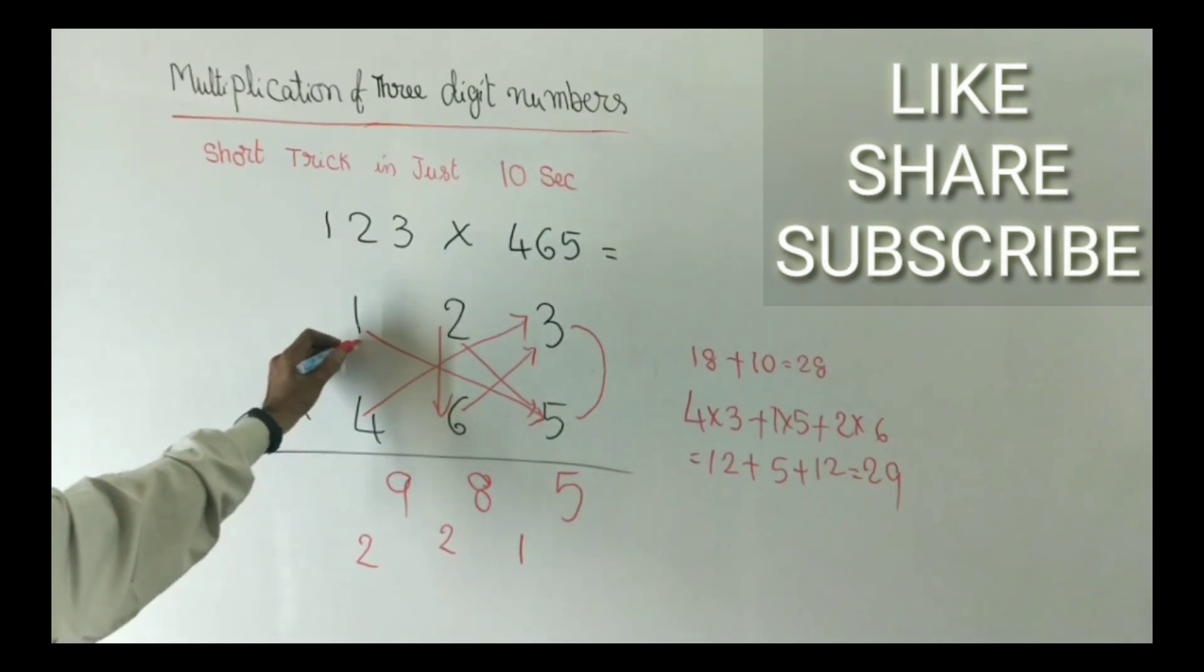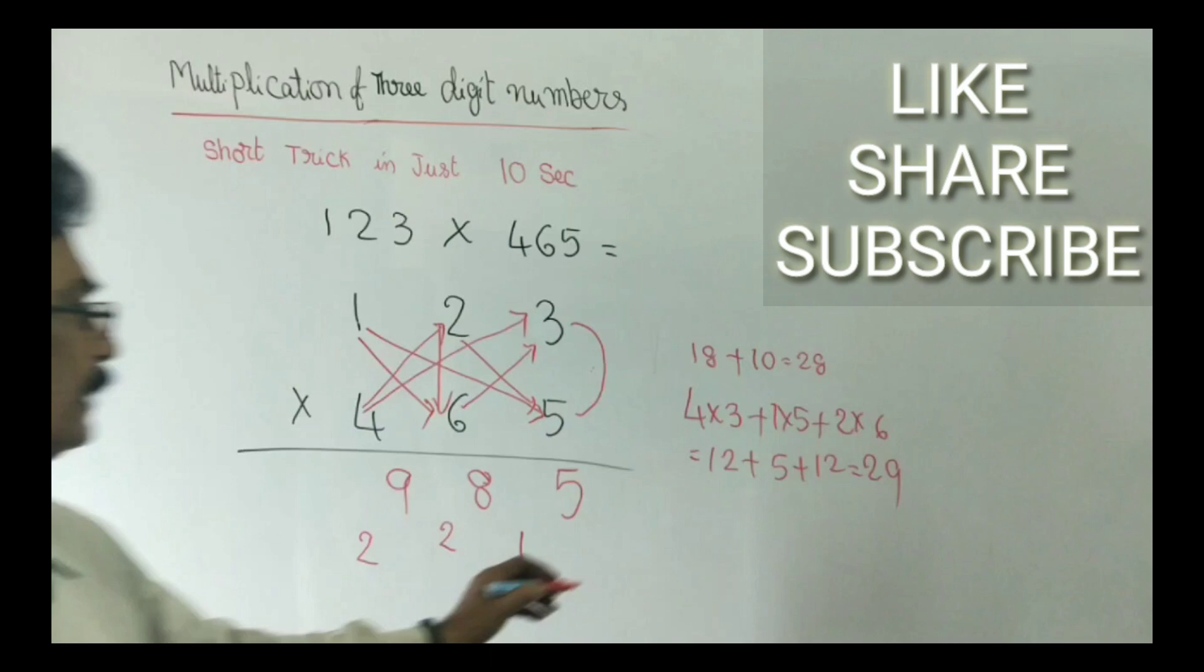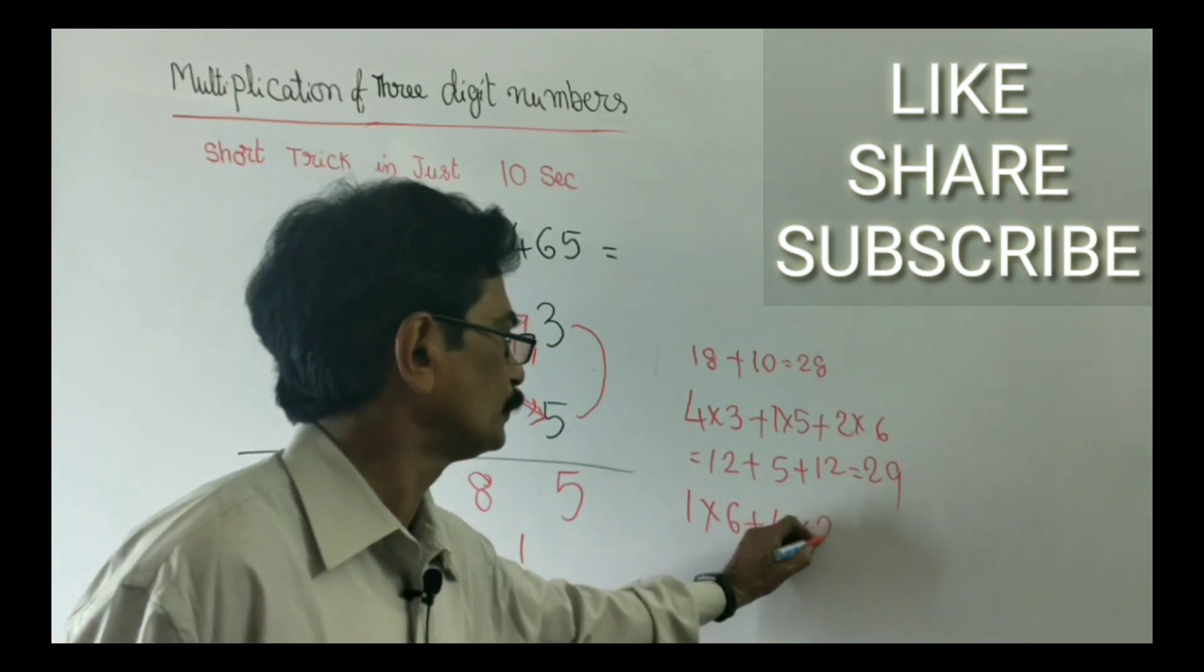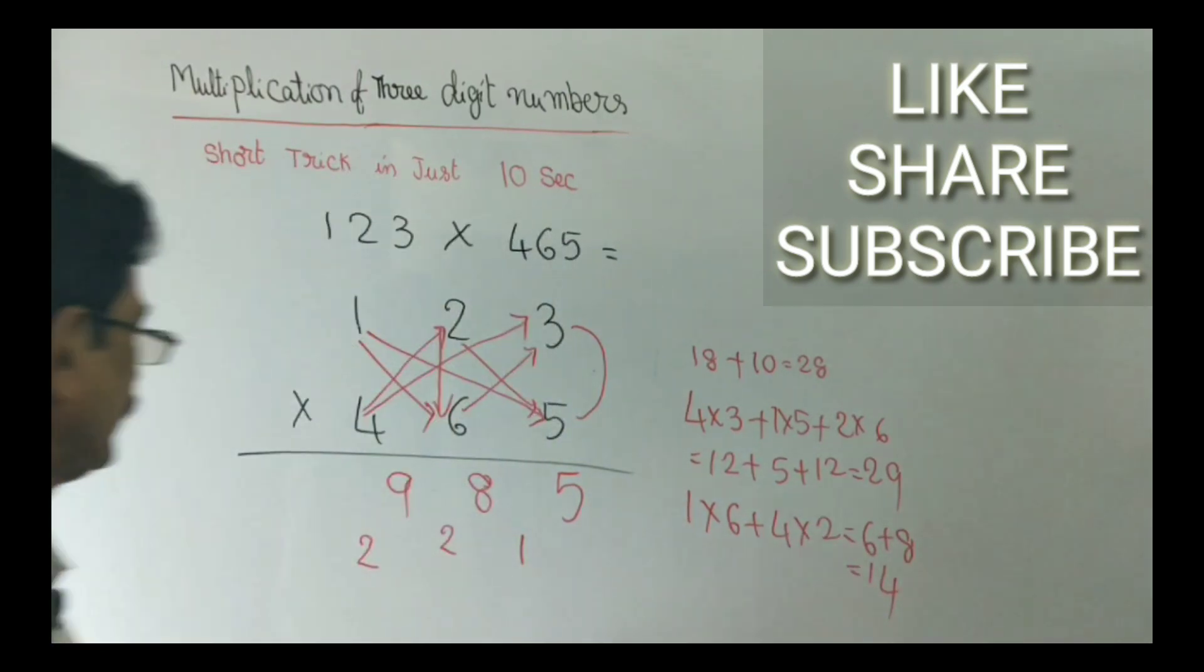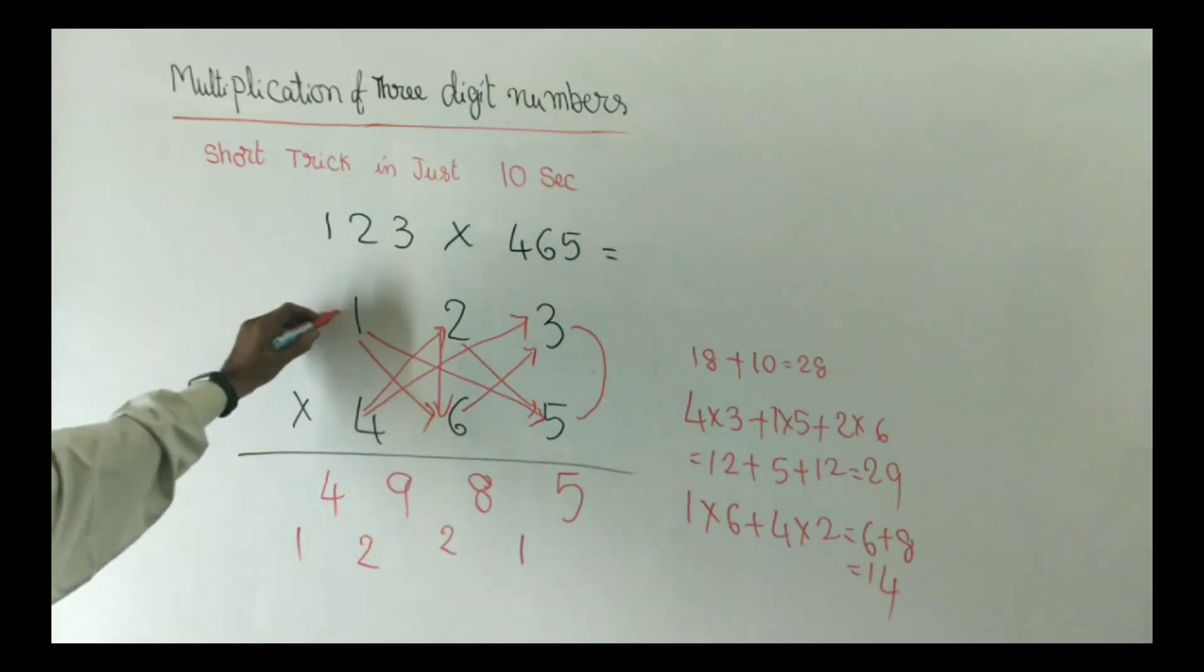Next step, these two product: 1 into 6, 4 into 2. 1 into 6 plus 4 into 2, 6 plus 8, that is equal to 14. 4 right here, 1 right in the down. Last step.